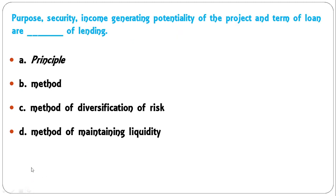Purpose, security, income-generating potentiality of the project, and term of loan are examples of what: principle of lending, method of lending, method of diversification of risk, or method of maintaining liquidity? The most appropriate answer is principle of lending, so A is the correct answer.